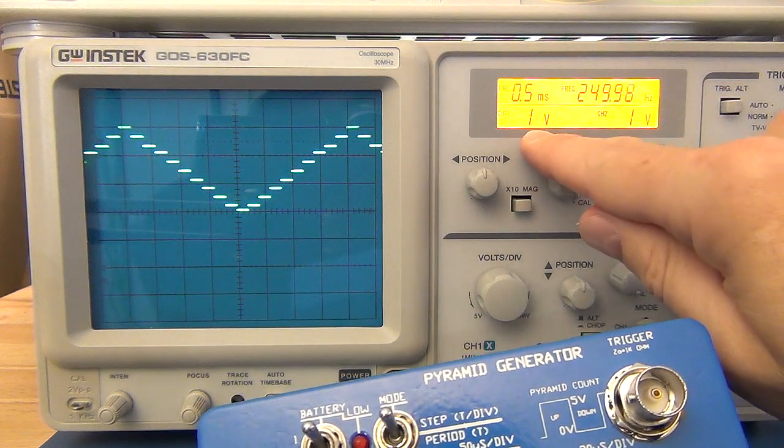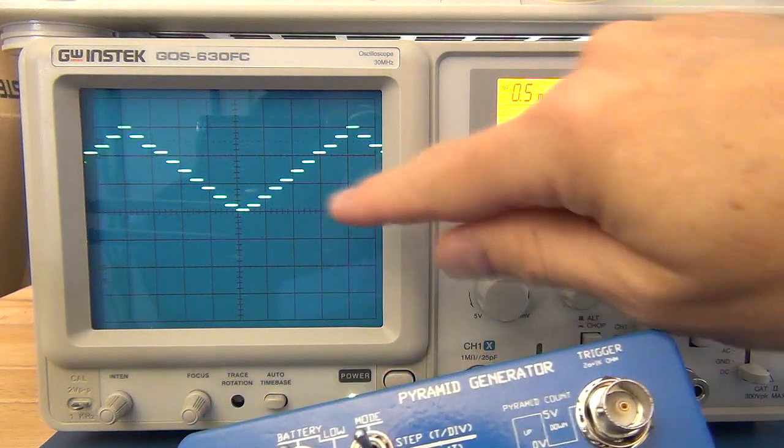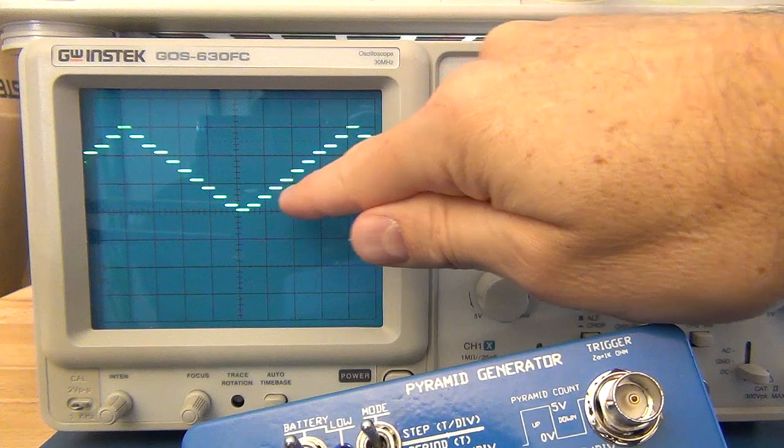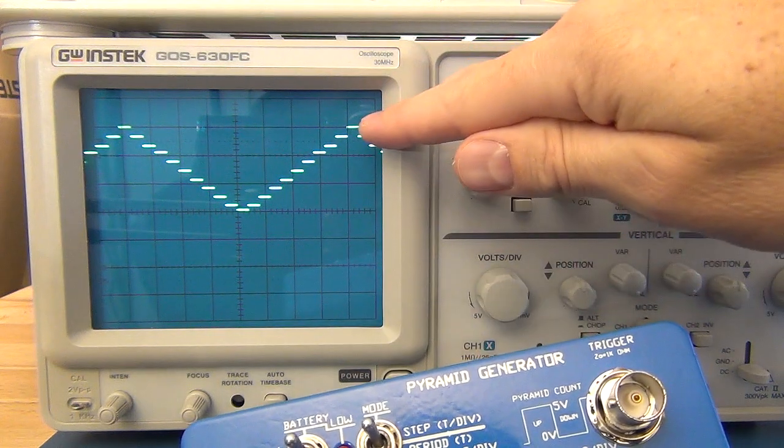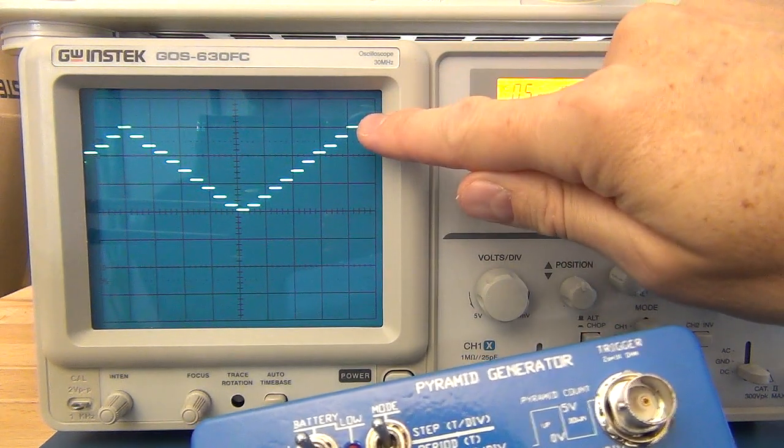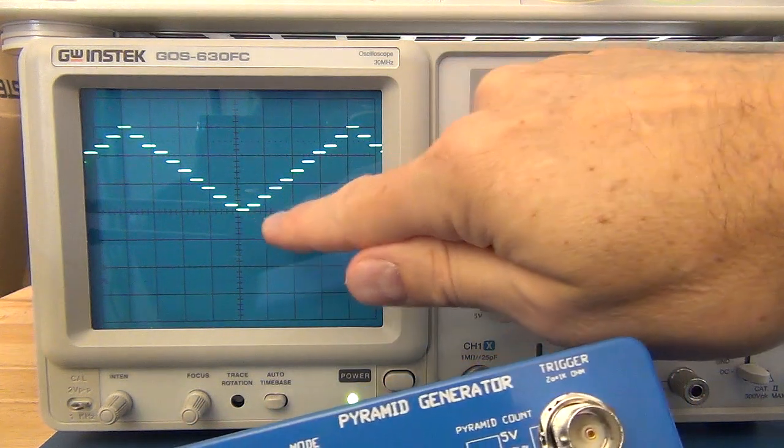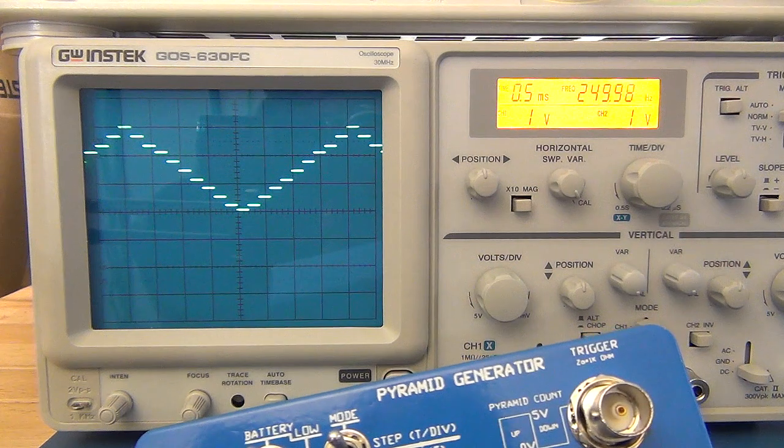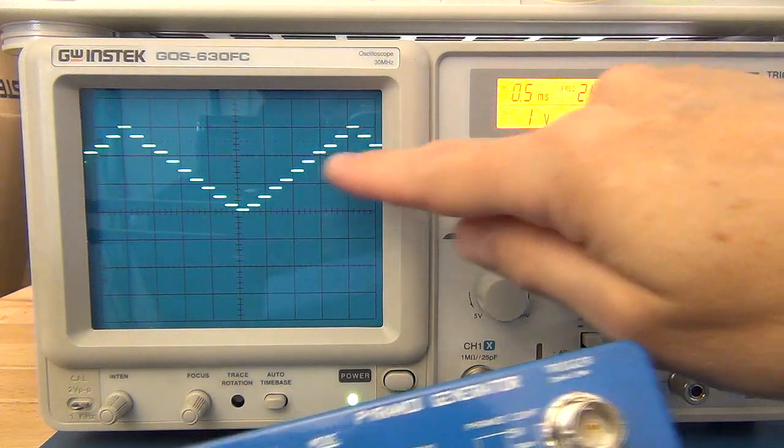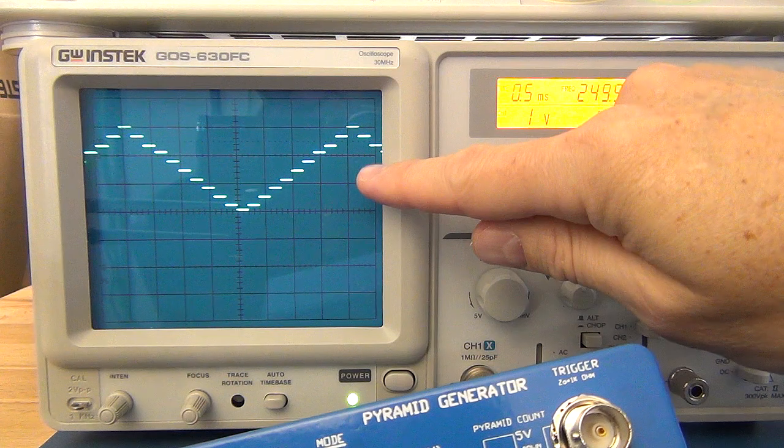On the scope I've got it set to 1 volt per division and if we count the divisions we've got 1, 2 and 3. So you can see from the top of the pyramid over there which is just on the graticule line down to the zero line we've got our 3 volts. So that should give you a reasonable amount of confidence about the voltage setting.